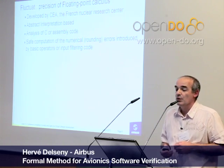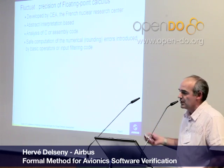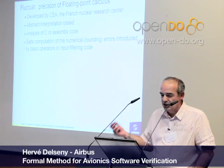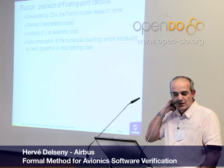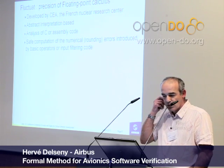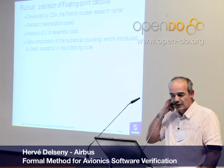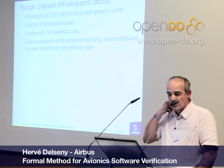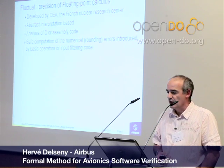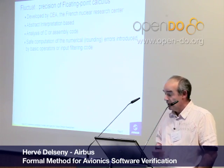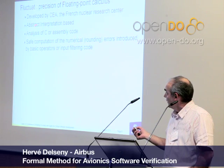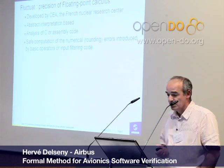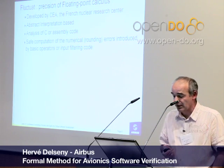Next, we are working on a tool called Fluctuat for precision of floating point calculus. It is developed by CEA, the French Nuclear Research Center, and is also based on abstract interpretation. It works on C code — it is not always possible to work on binary — and the idea is to obtain a safe computation of numerical errors.